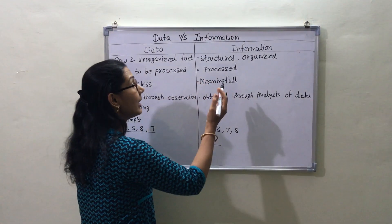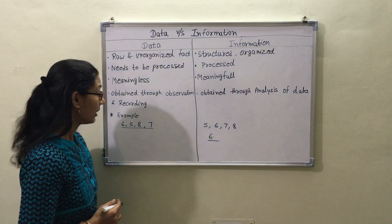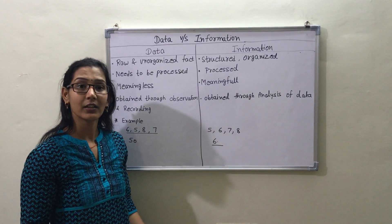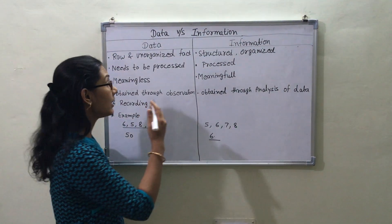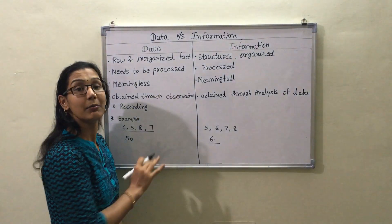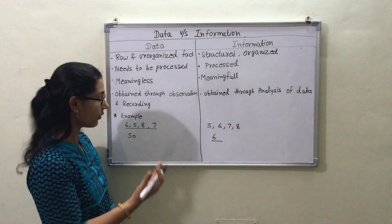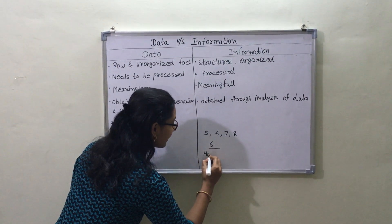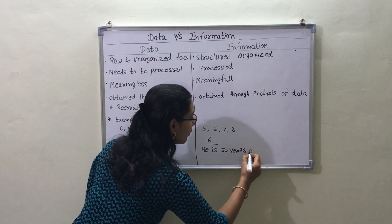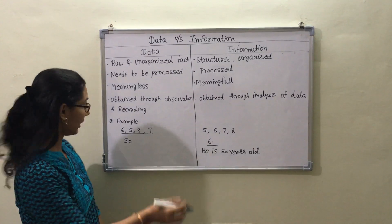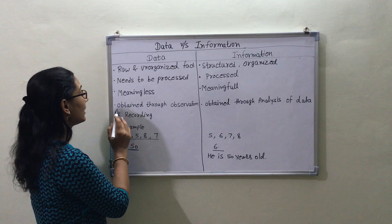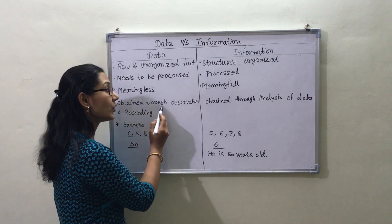The next point is data is meaningless while information is meaningful. Suppose the number is 50 — on its own, 50 is anything, so it is meaningless; it is data. But when we use 50 in a given context, it becomes meaningful and is information. For example, 'He is 50 years old' — that is information.